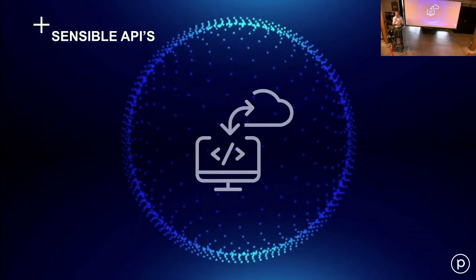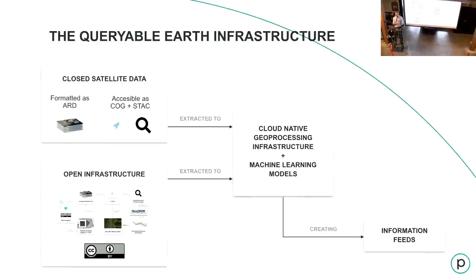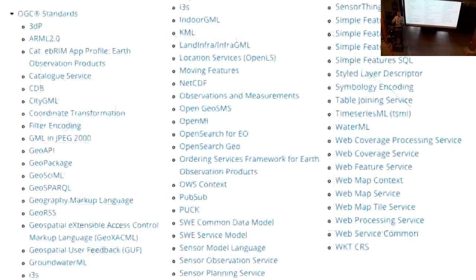The true final step is to wrap all this great infrastructure into interfaces that truly abstract out GIS and remote sensing. A normal developer shouldn't have to learn a bunch of special APIs just to make use of information derived from imagery. I believe these pieces are the core of a Queryable Earth infrastructure — we need ARD processed to STAC and COG, using machine learning models and producing these information feeds. The interface to that world needs to be more accessible; we can't just make a bunch of different interfaces with tons of operations and expect the world to thank us.